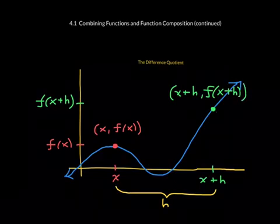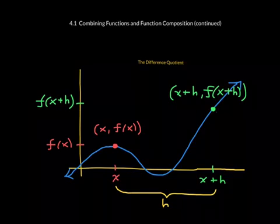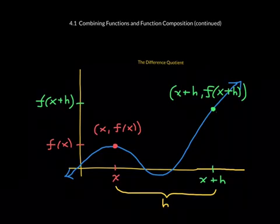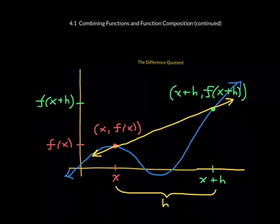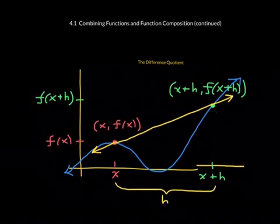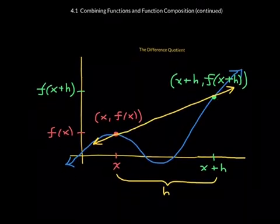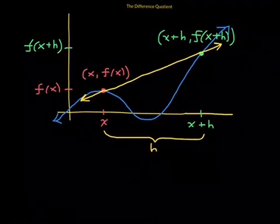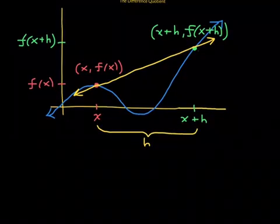Now we have two different points on the graph of our curve. What we'd like to do next is draw the secant line through these two points — that is, the line that goes through the graph through these two points. This is the secant line. What we want to do is find the slope of this secant line.